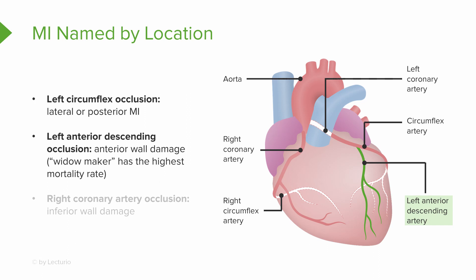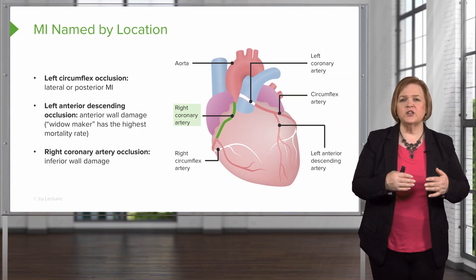We talked about the left circumflex occlusion and how it normally wraps around the back of the heart. We've also talked about the widow maker — the left anterior descending artery. If that's occluded, we have a significant impact on the left ventricle, which is responsible for pushing blood out to the rest of the body. Finally, the right coronary artery — a right coronary artery occlusion is inferior wall damage. So we've used several terms: lateral, posterior, anterior, and inferior. Make sure that when you see those words, you know which artery is involved.